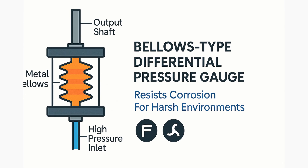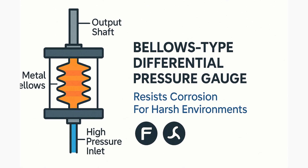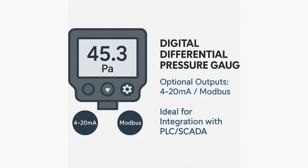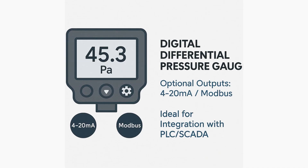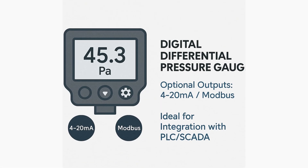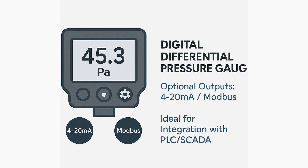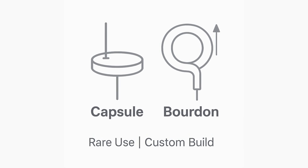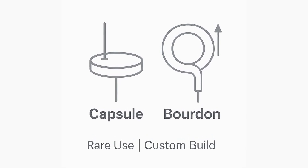The third type is the balance type differential pressure gauge, which uses a metal balance and sensing element and is ideal for corrosive environments and high pressure systems. The fourth type is the digital differential pressure gauge, which has an electronic display with high resolution, optional output like 4 to 20 milliampere or Modbus, and is ideal for integration with PLC and SCADA systems.